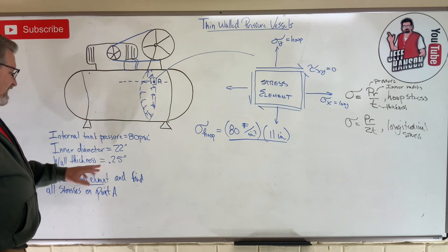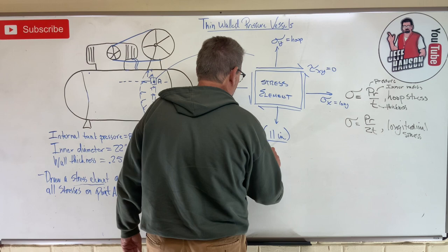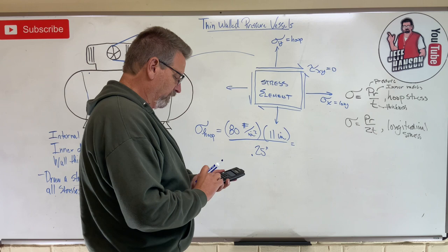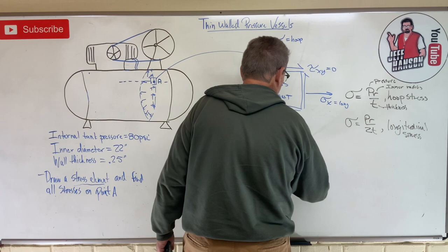Divided by t, and the wall thickness is 0.25 inches. So what is that? Well, that is 80 times 11 divided by 0.25, which equals 3520.